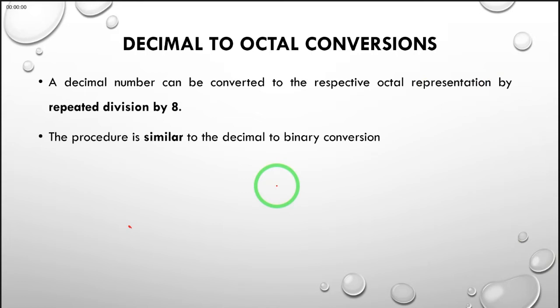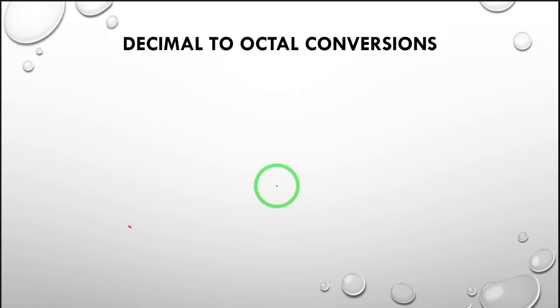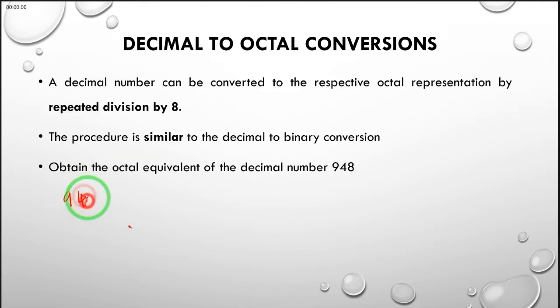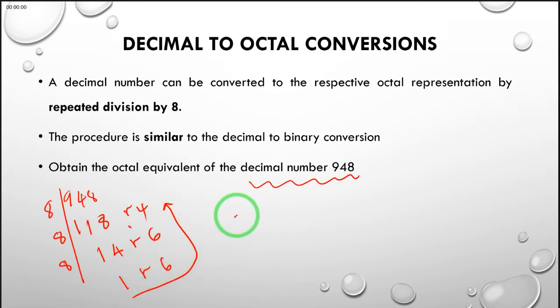The procedure is similar to the decimal to binary conversion. To obtain the octal equivalent of the decimal number 948, you do repeated divisions by 8. The first answer is 118 remainder 4. 118 divided by 8 is 14 remainder 6. 14 divided by 8 is 1 remainder 6. We read upwards, so 948 in decimal is equivalent to 1664 in base 8.